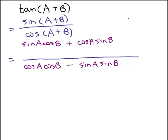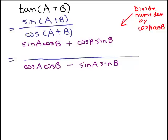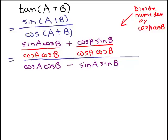I'm going to divide the numerator and denominator by cosine A cosine B. You can do that and it will still be an equivalent fraction. When you divide the numerator, each term in the numerator gets divided by cosine A cosine B. Everything gets divided by cosine A cosine B.